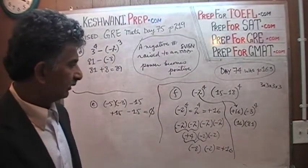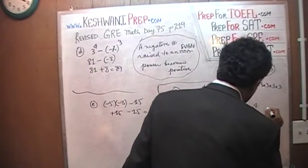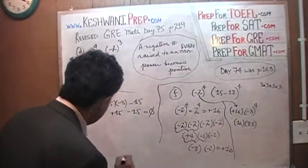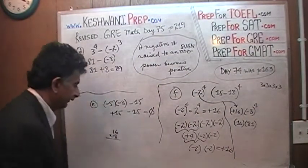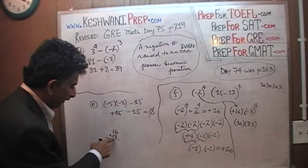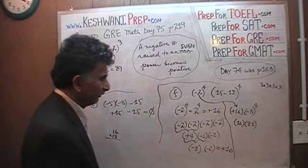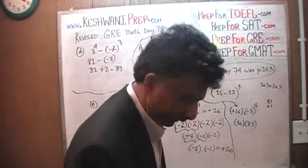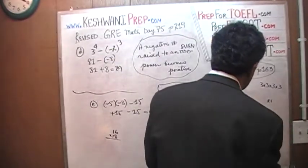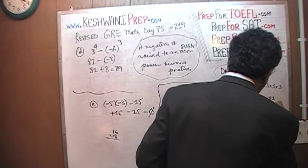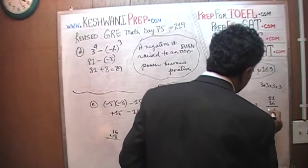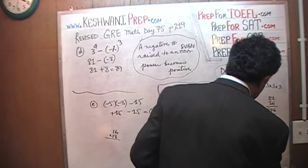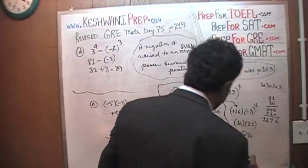Did they actually give you 16 times 81? Let's do it out here. 16 times 81 — I prefer to multiply by 6 first: 81 times 16. 6 times 1 is 6, 6 times 8 is 48. And then 81 times 1. Looks like 1296 is the answer.